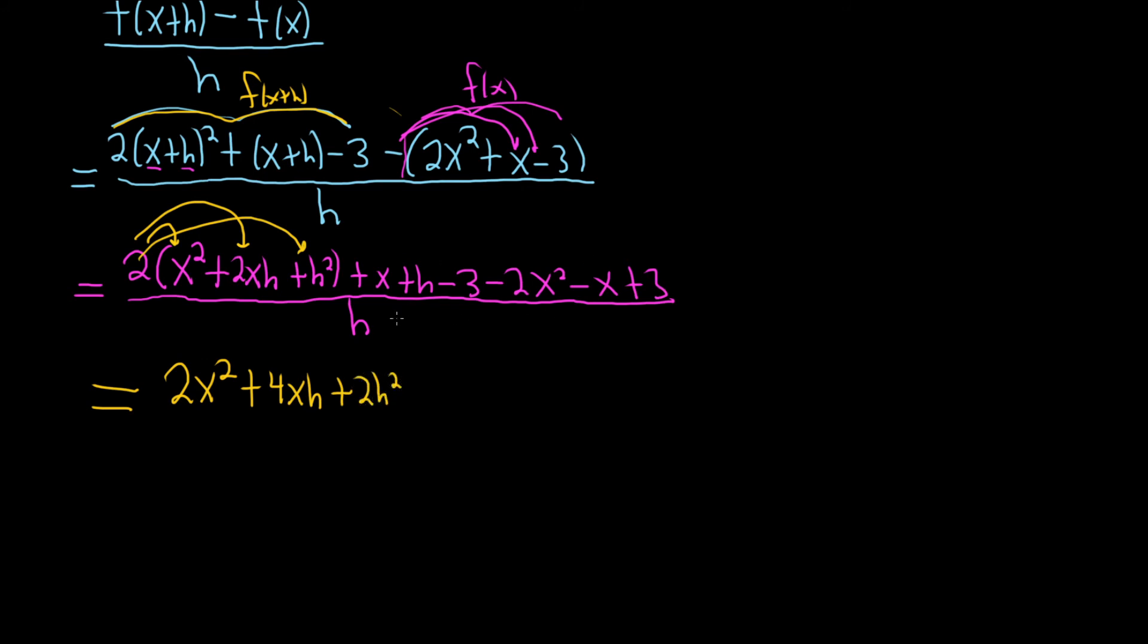Anything happening here? Oh, look, the x's go away. 3's go away. That's really good. 4xh plus h minus 2x squared. And it's all being divided by lowercase h.